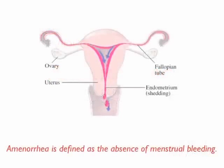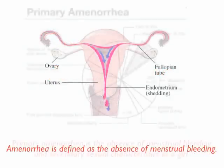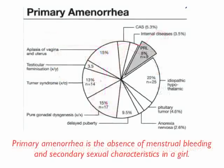Amenorrhea is defined as the absence of menstrual bleeding. Primary amenorrhea is the absence of menstrual bleeding and secondary sexual characteristics in a girl. In this diagram, the different causes of primary amenorrhea are described.